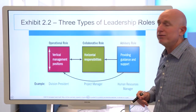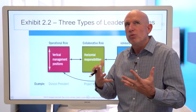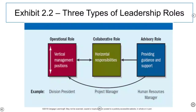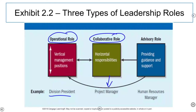There are three types of leadership role to consider as you think about where your strengths fit. The operational role is germane to vertical management positions such as a division president. The collaborative role is definitely project management — project managers need great ambidexterity because they lead and manage people voluntarily while also managing budgets and staffing. The advisory role involves leaders who provide guidance and support, and these people often have tremendous strengths in the HR domain.